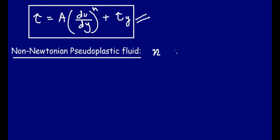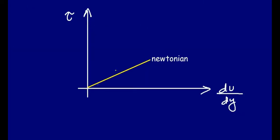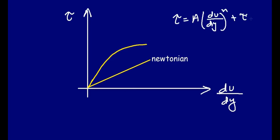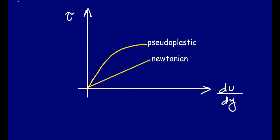First we have the non-Newtonian pseudo-plastic fluid. For pseudo-plastic fluid, in the equation tau = A(du/dy)^n + tau_y, the value of n is less than 1 and tau_y equals zero. These are the conditions for which we call the fluid a pseudo-plastic fluid. If we plot this, we get a curve that starts from the origin and curves upward less steeply. This is the pseudo-plastic curve on the rheological diagram.